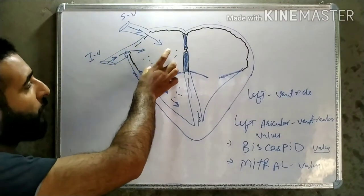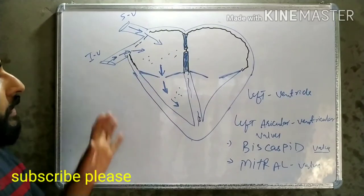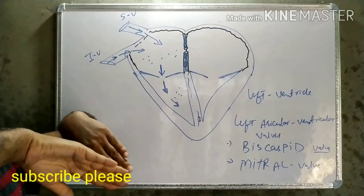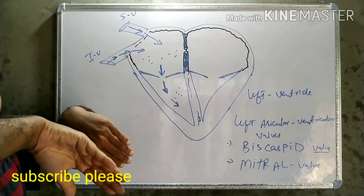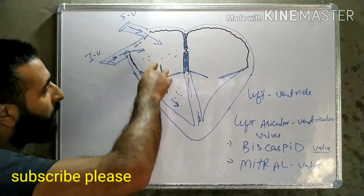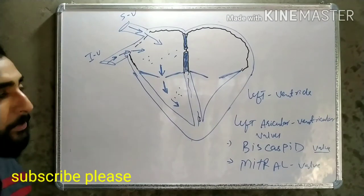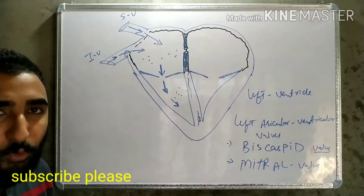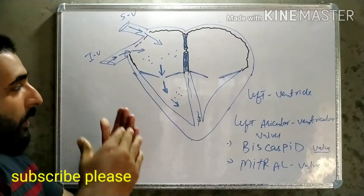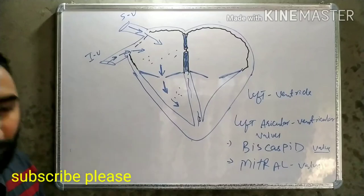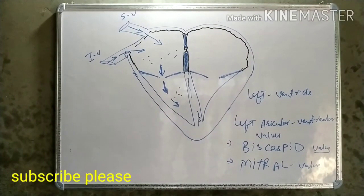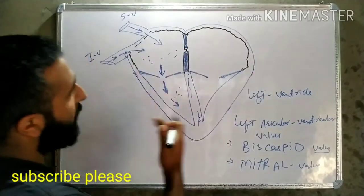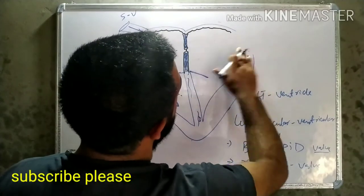The blood is regulated by the tricuspid valve. When the blood pressure exceeds in the right atrium, the valve opens up and the blood comes into the right ventricle. When the pressure is reduced, this valve closes automatically. It is a simple mechanism. The same happens on the other side as well.